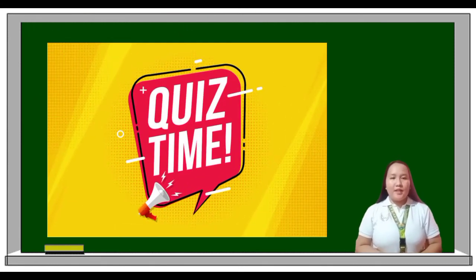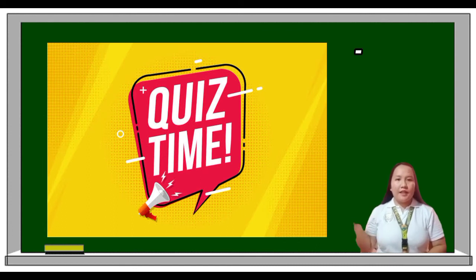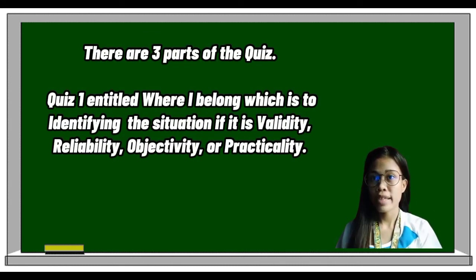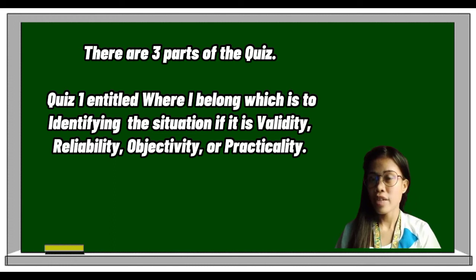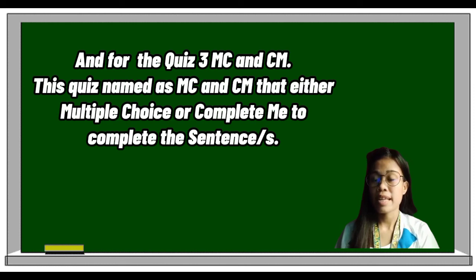We have also prepared a quiz to analyze the learning outcomes on what you have learned about the qualities of a good test instrument. There are three parts: Quiz One, entitled 'Where I Belong,' requires identifying situations as validity, reliability, objectivity, or practicality. Quiz Two, entitled 'Name Me,' asks for the exact word being described. Quiz Three, called 'MCNCM,' is either multiple choice or complete-the-sentence format.